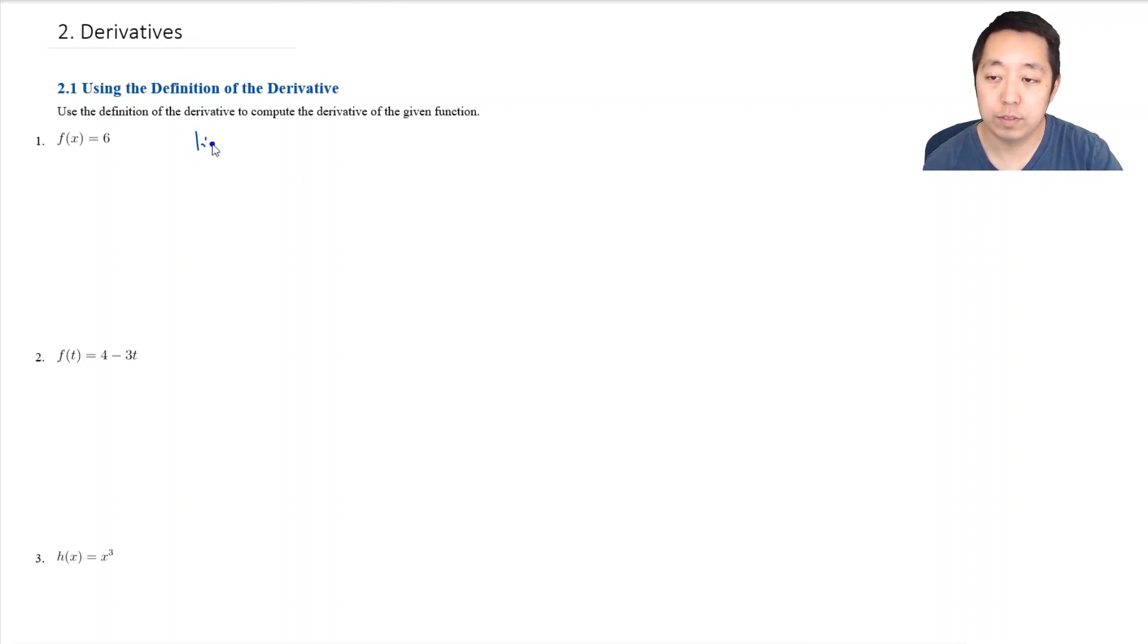And I'm going to write the limit definition as delta x goes to zero of f of x plus delta x minus f of x divided by delta x. Sometimes some teachers use h instead of delta x, it doesn't really matter. It means the same thing. The idea is it's a secant line slope and you're taking the limit as that secant line slope approaches a single point.